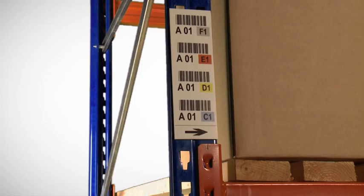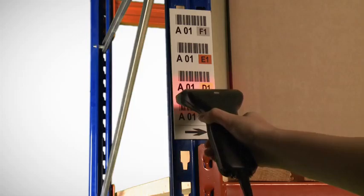If you don't have man-up trucks, a plate sitting on the upright frame at eye level enables the picker to scan the barcodes of the upper locations.